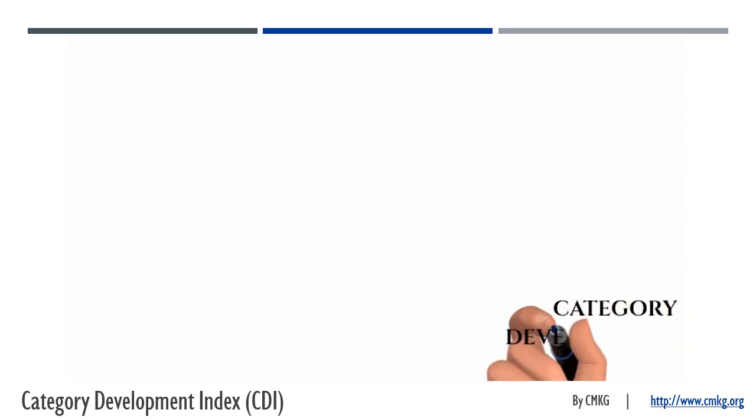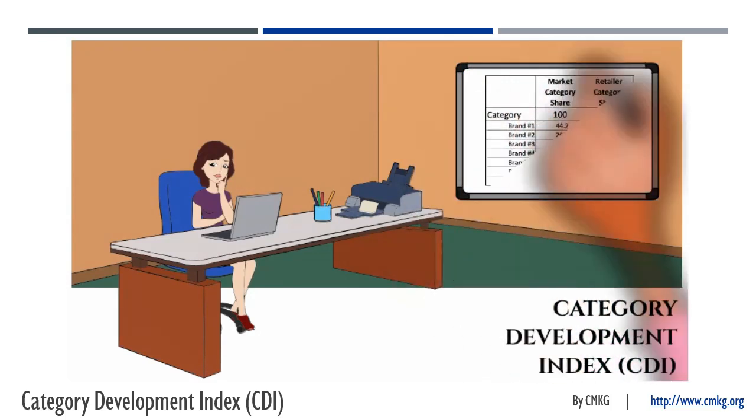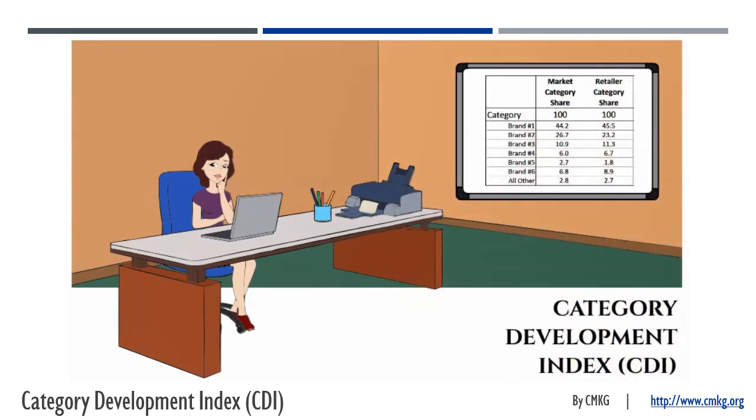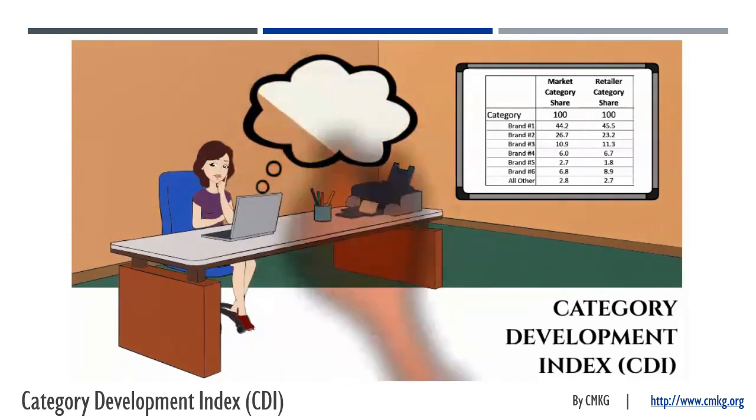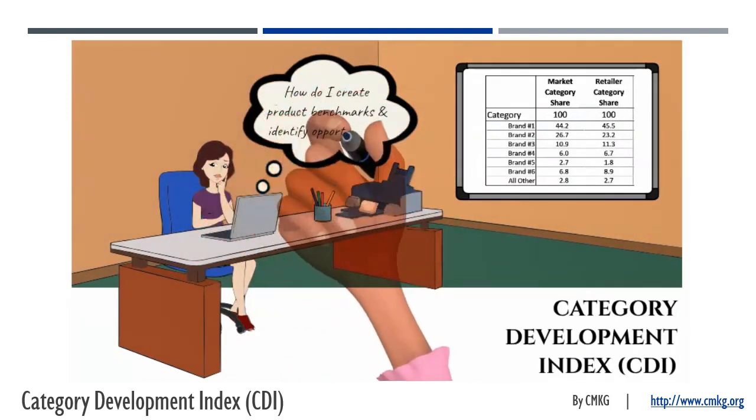The Category Development Index, or CDI, is a useful calculation for comparing the category share of a product group for a retailer versus the total market. It assists both retailers and suppliers in creating benchmarks and identifying opportunities for their business.